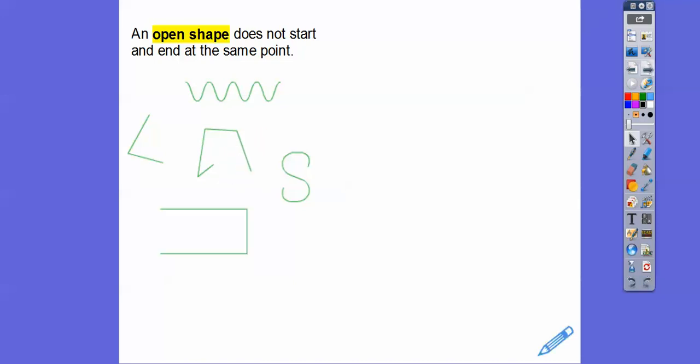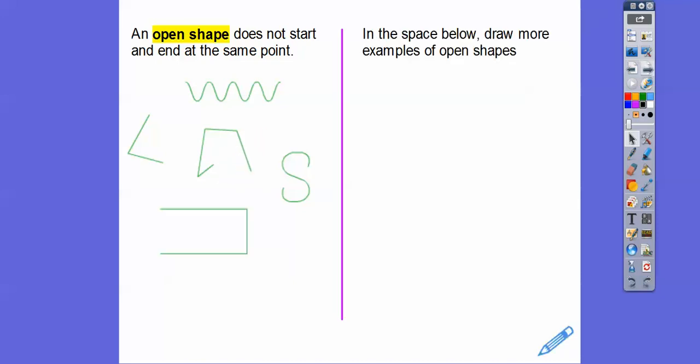We can draw all kinds of open shapes. Something like this — that's an open shape with no inside or outside. Here's another one, and another one. As long as there's an open hole inside, it's called an open shape.